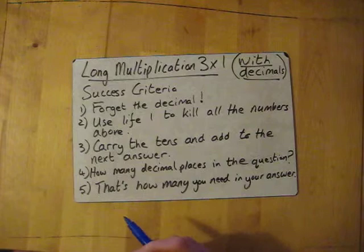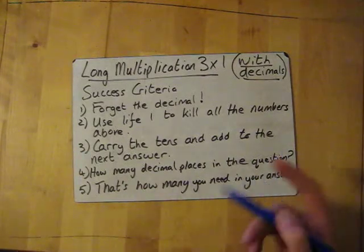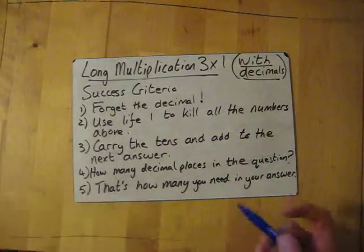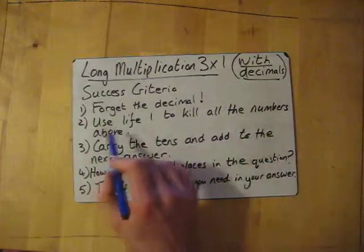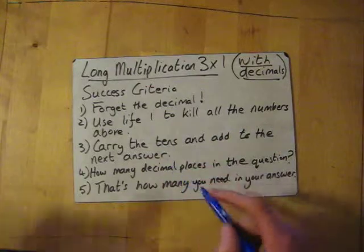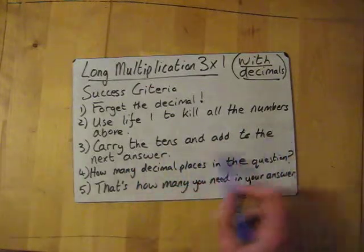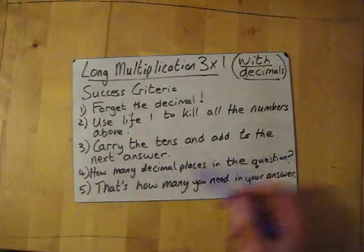With 3 by 1, only with decimals, there's two extra bits that you add in. One is: forget about the decimal right off the bat. Then use your life one to kill all the numbers above as you did previously, carry the tens and add to the next answer.